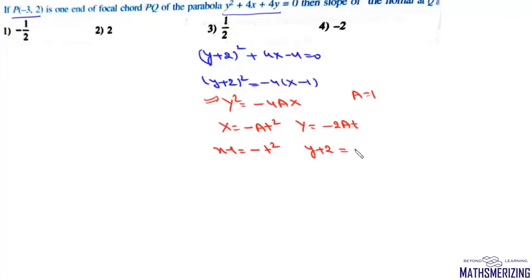So we'll write x minus 1 as minus t square and y plus 2 equals minus 2t. So the parametric coordinate P will be 1 minus t square and minus 2 minus 2t.